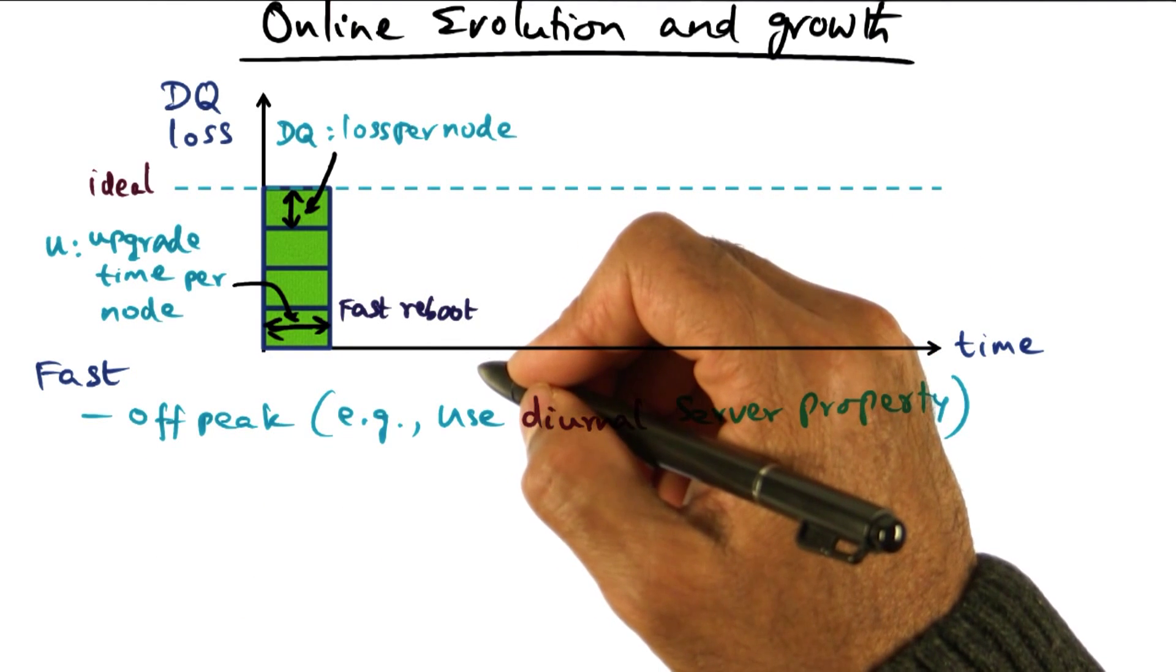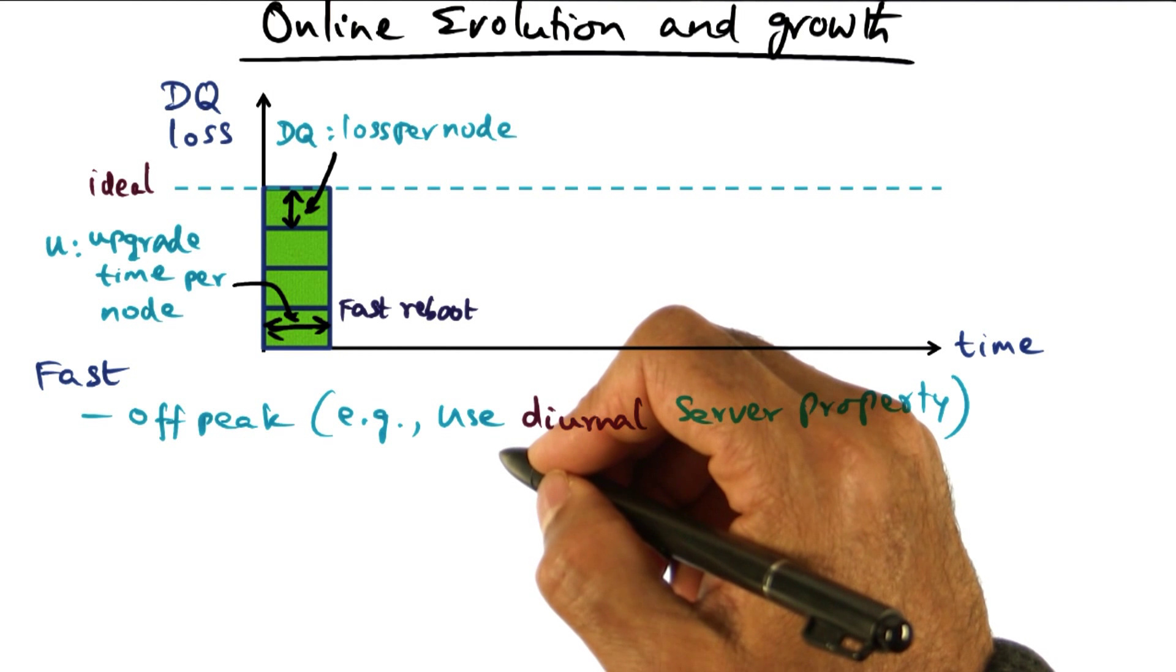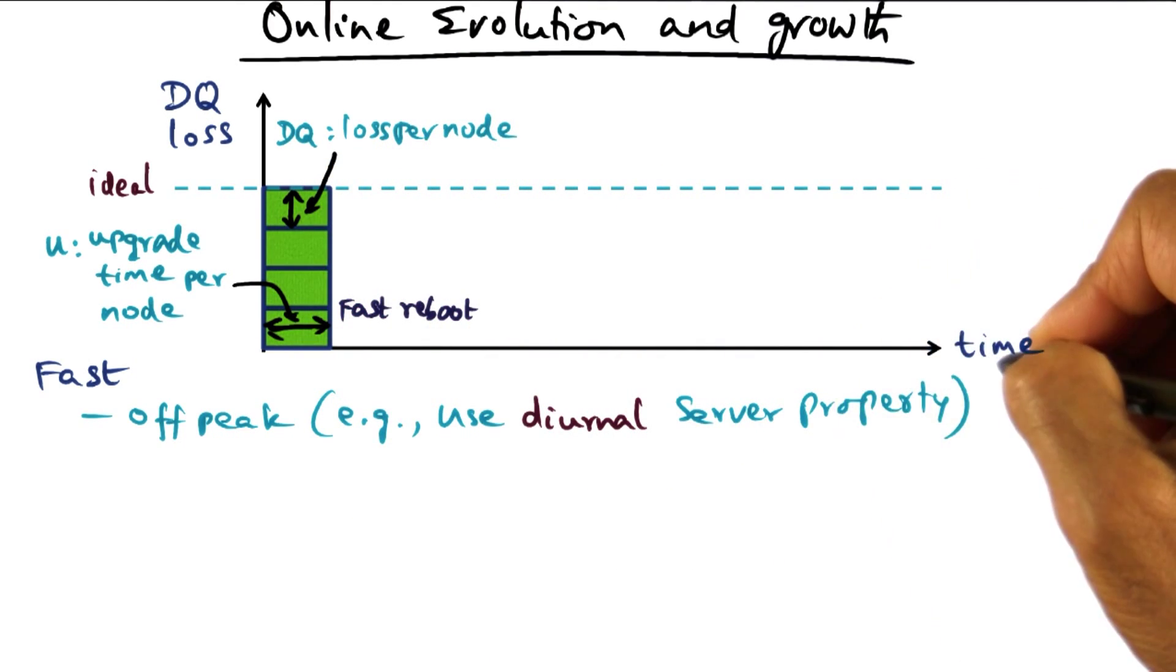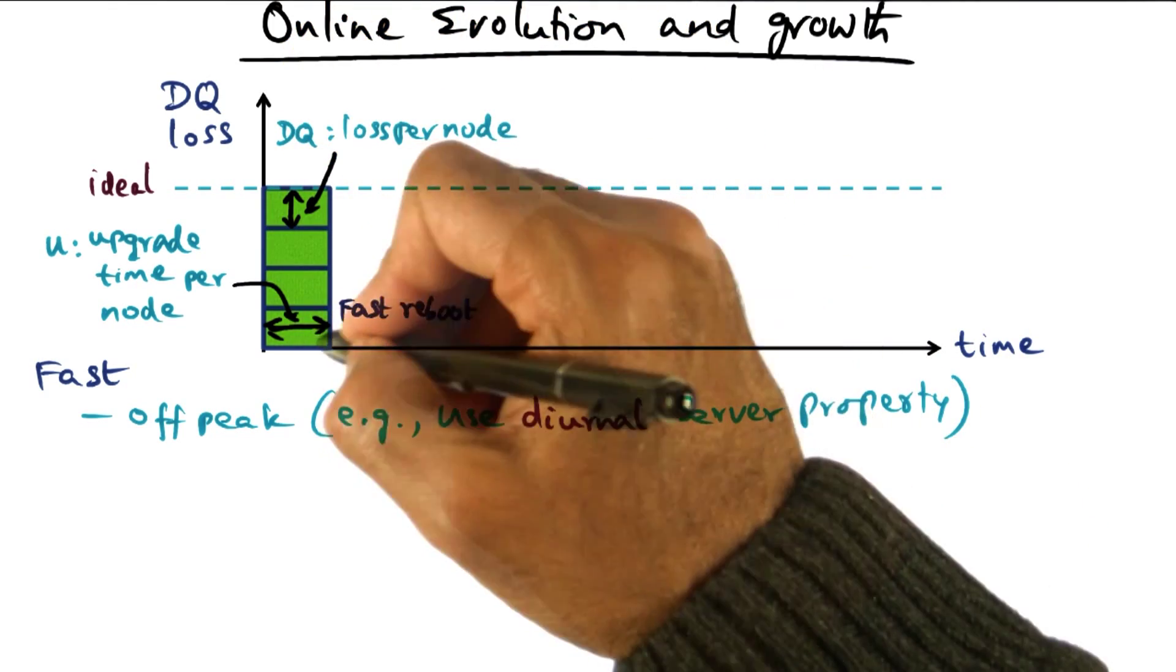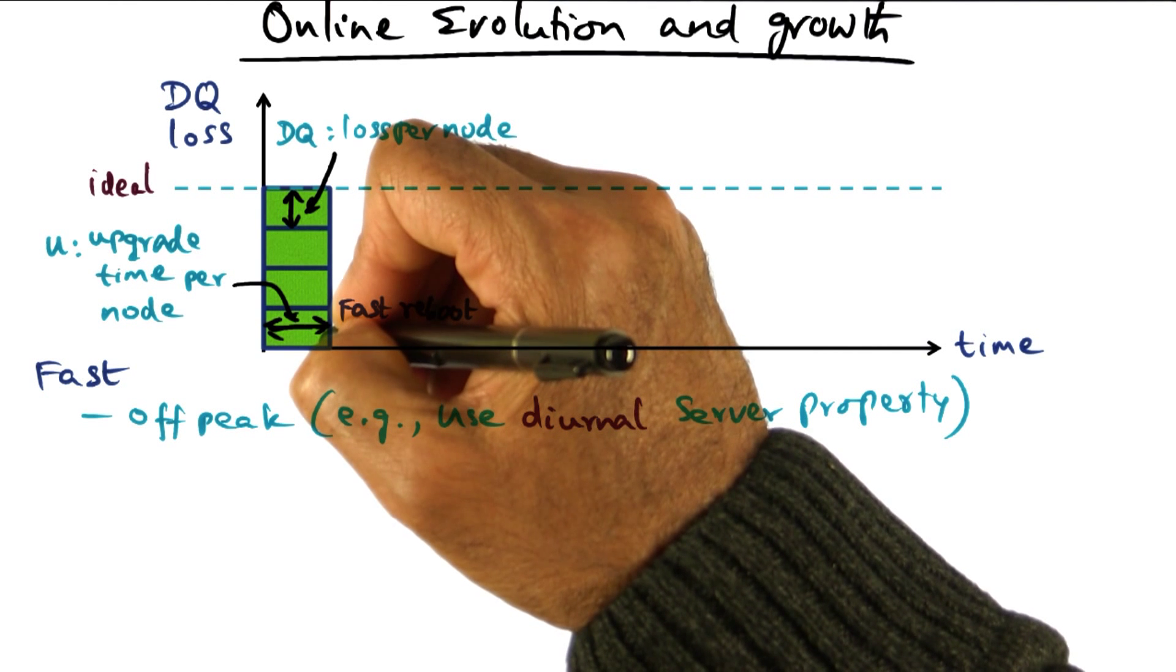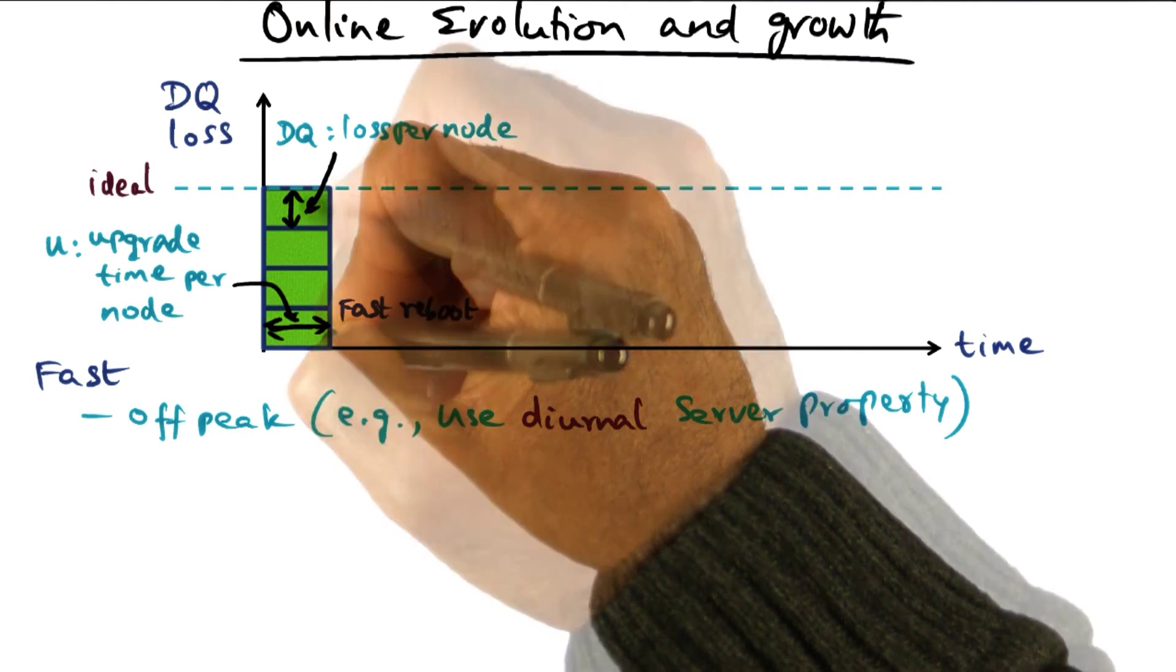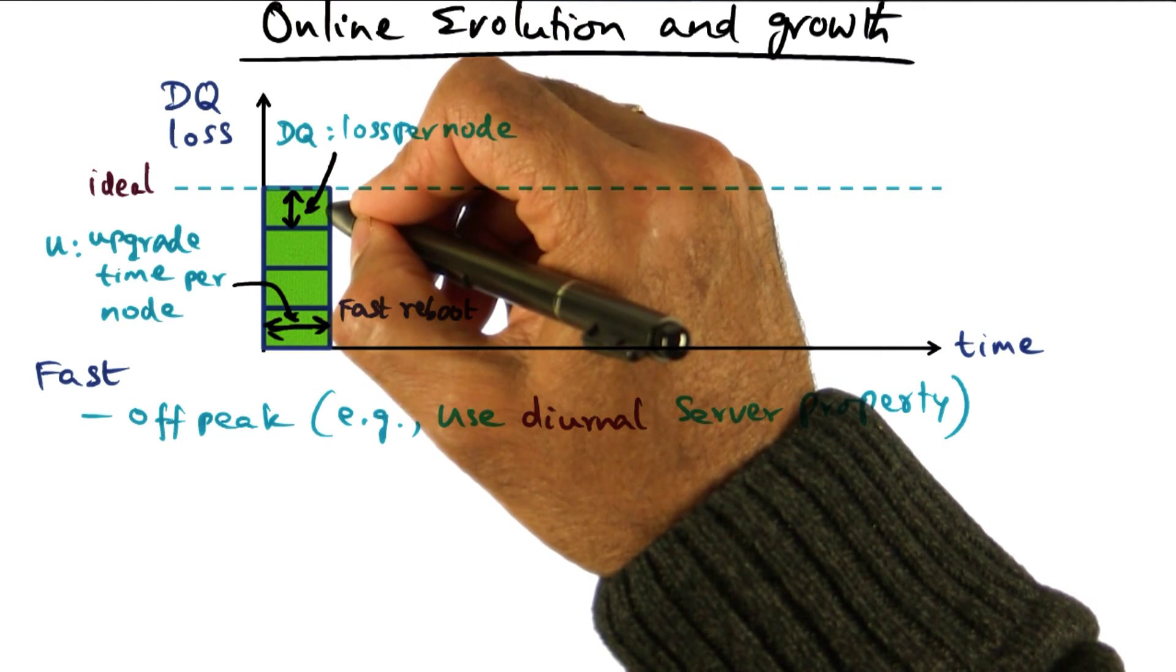The first choice is what is called fast reboot. That is, bring down all the servers at once, upgrade them, and then turn them back on. So this diagram is showing you time on the x-axis and the loss, DQ loss on the y-axis. And what you're seeing here, this is the time for the upgrade per node. So the amount of time a node is going to be down in order to do that upgrade, whether it is a software upgrade or a hardware upgrade. And this y-axis segment is the DQ loss per node.